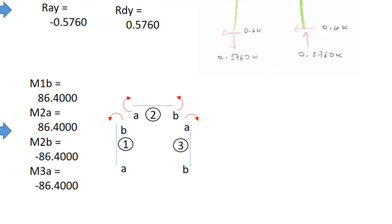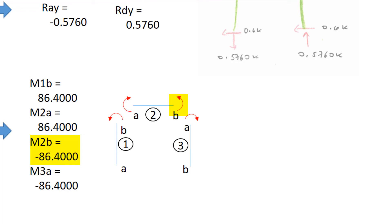Let's move on to our moments. These are the expressions we determined previously by hand, along with the positive sign convention to remind ourselves how to interpret positive versus negative. The moment on member 1 at location B is in the direction of the arrow. The moment on member 2 at location A is in the direction of the arrow — upward curvature. At location B on member 2, it's opposite to the arrow — downward curvature. Similarly, on member 3 at location A, it's opposite to the arrow — leftward curvature. Since there are no member loads, shear is constant and moment is linear, so the moment diagram is linear between these identified values, remembering that the two pinned bases have zero moment.